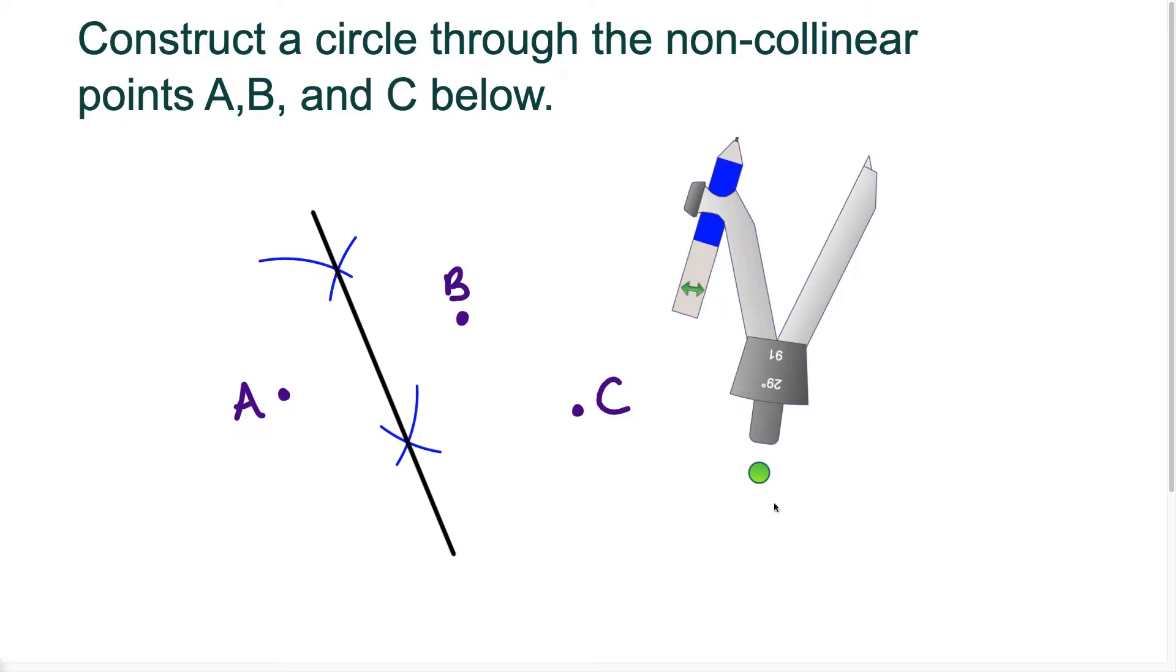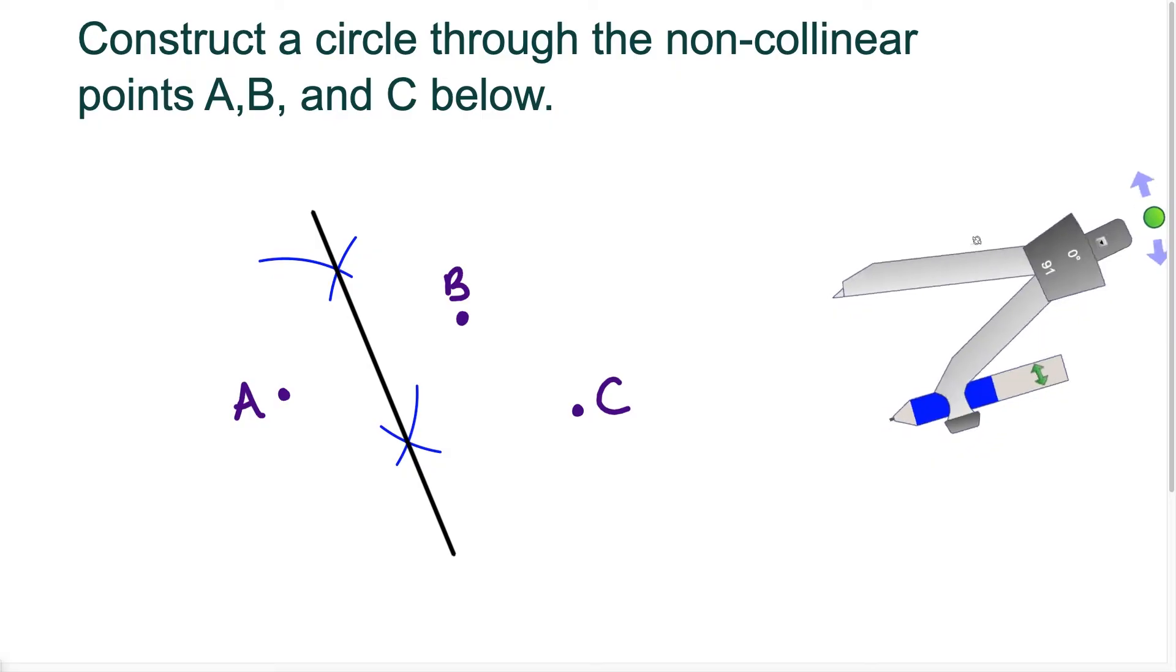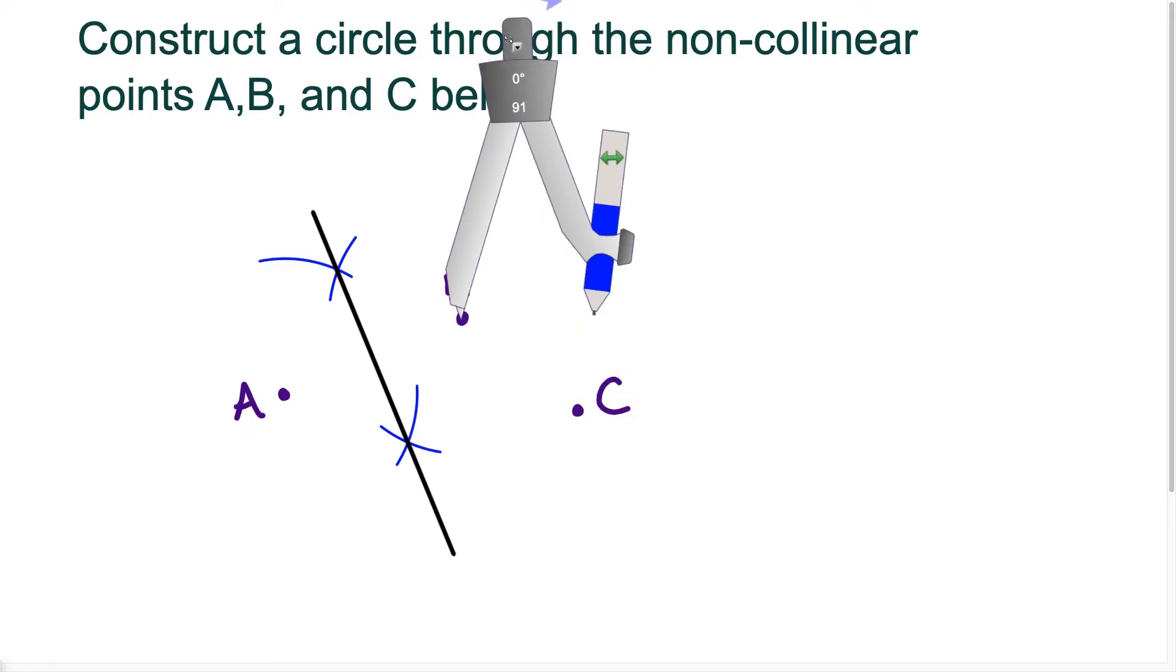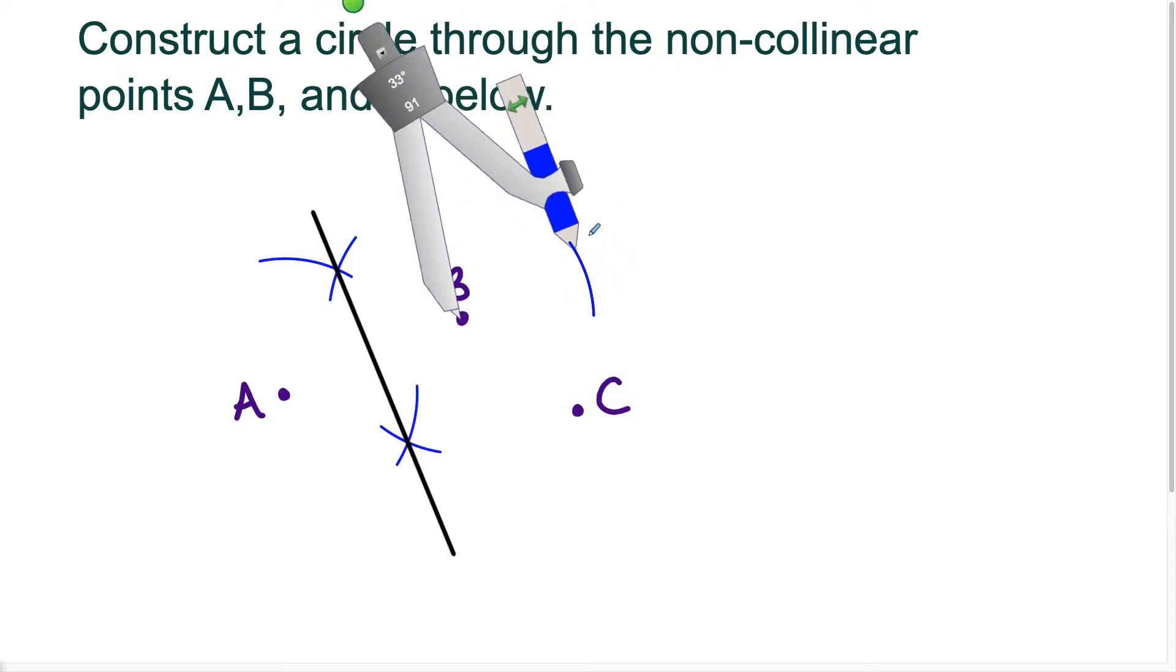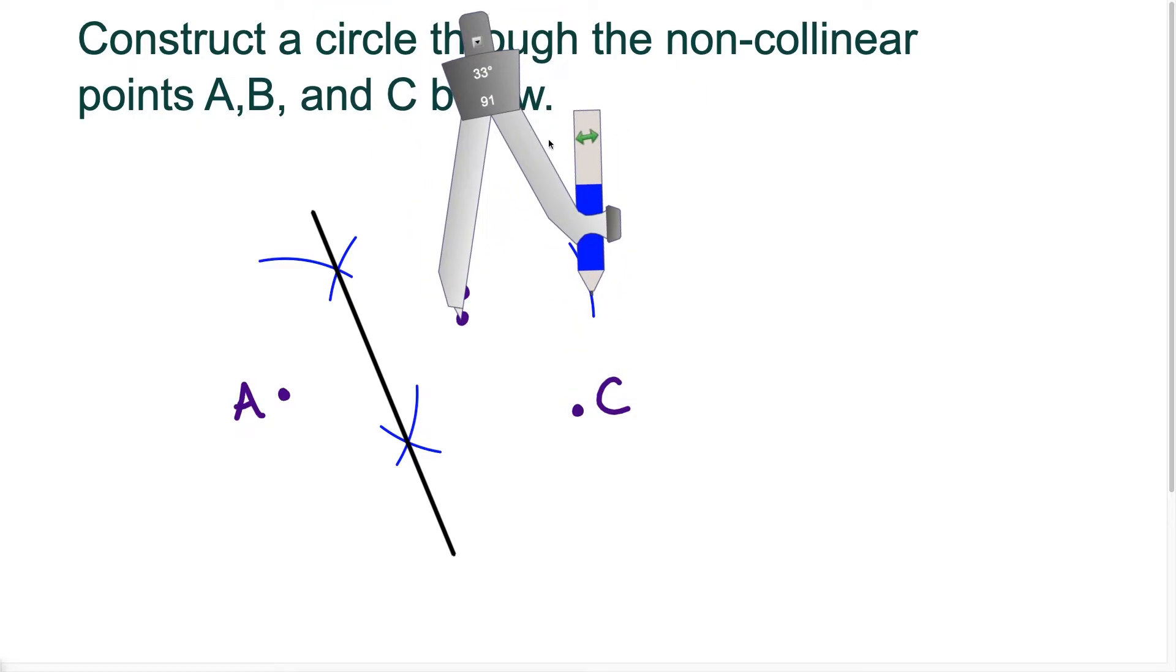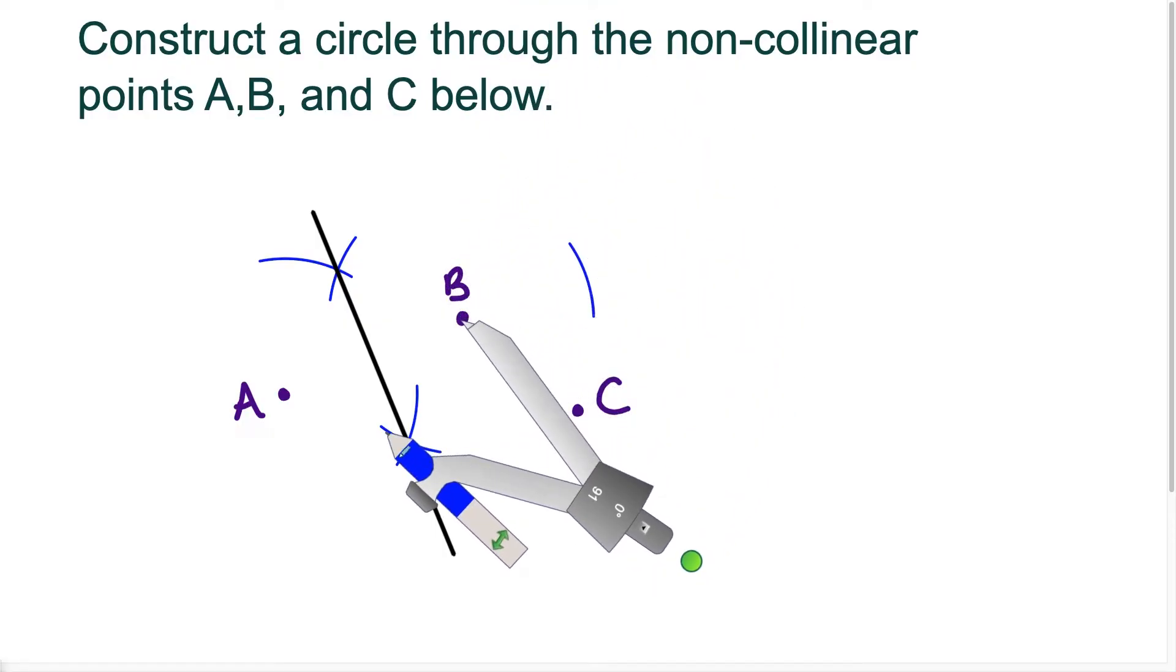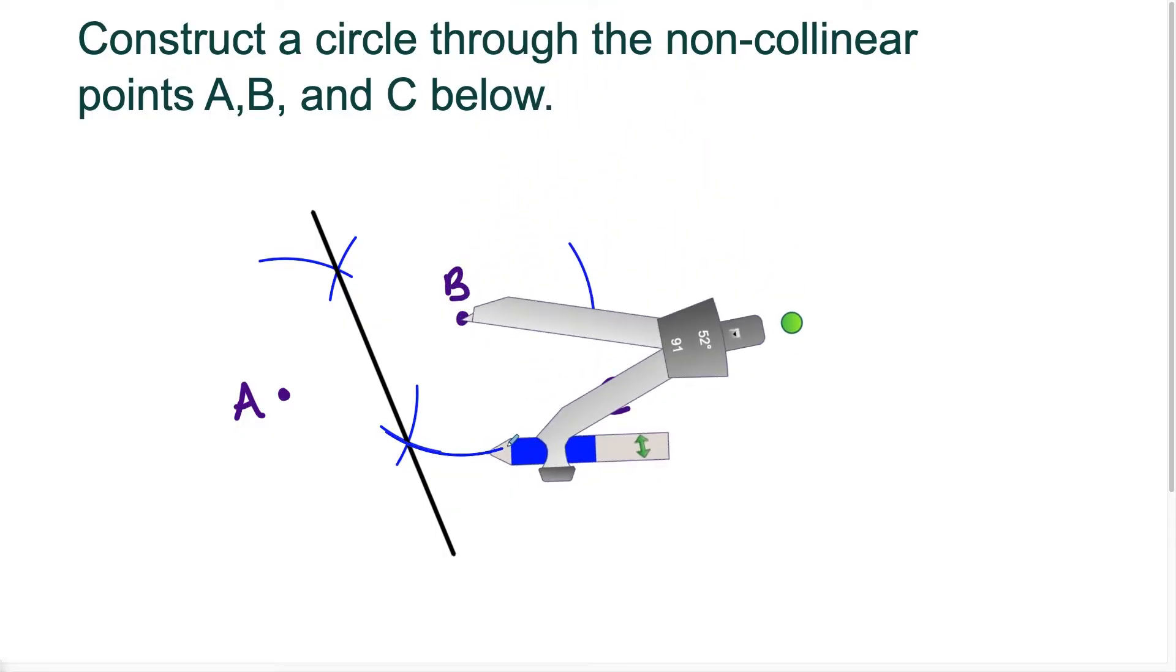So now to complete this construction, what I have to do is I have to set the compass on point B and now I want to find the perpendicular bisector of segment BC. So what we have here is if I swing this arc above, we have one of the arcs here that's going to help us. And now what I want to do is I'm going to move the compass below and I'll swing the arc below in this direction.